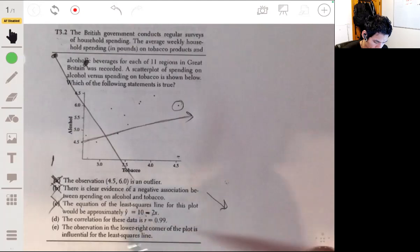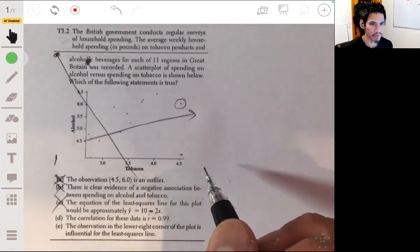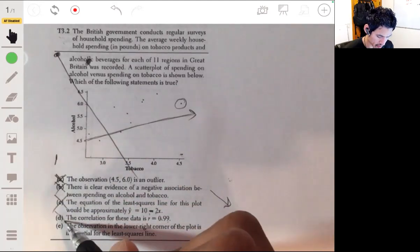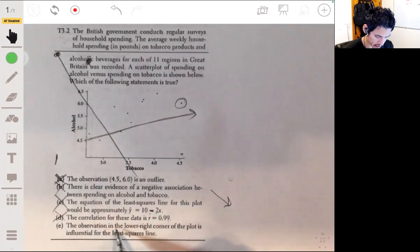The correlation for these data is r equals 0.99. No, I mean that's like a very strong relationship. Can't say that's true. So it looks like our answer is E: the observation in the lower right-hand corner of the plot is influential.